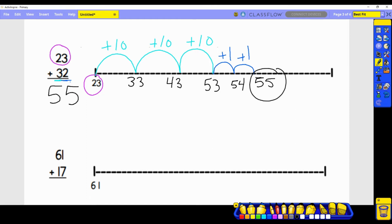Now looking at our next problem, we have 61 plus 17. We see that the 61 is represented on the number line. So we are looking closely at 17. How many tens are represented in 17? One. So we will have one jump that has a value of 10. How many ones are represented in 17? There are seven.